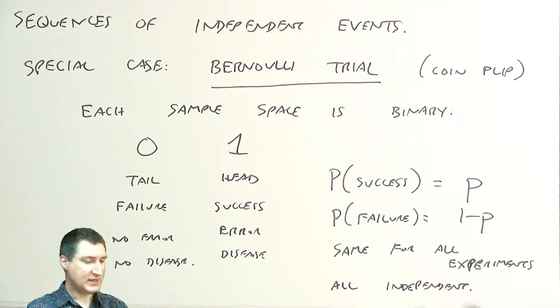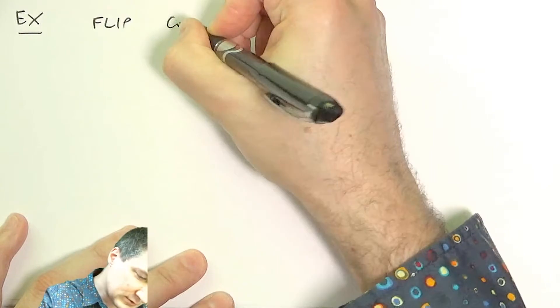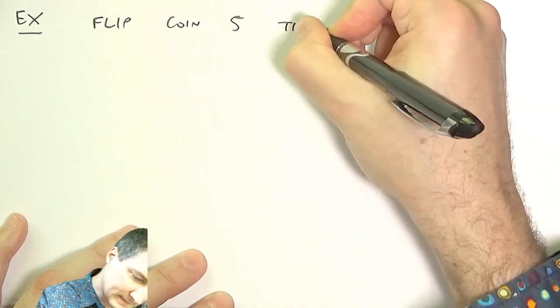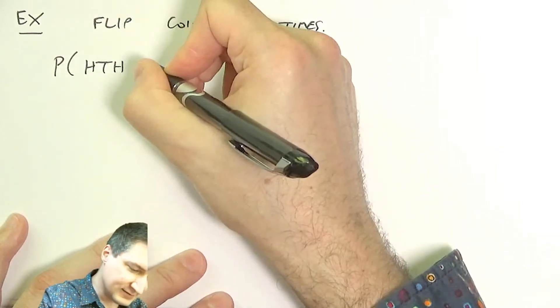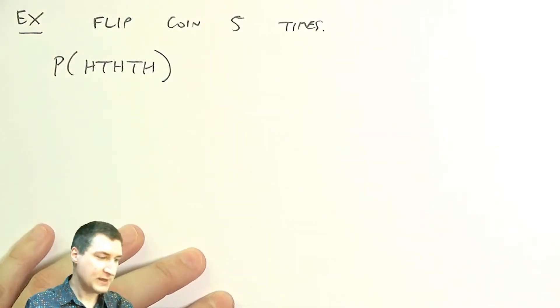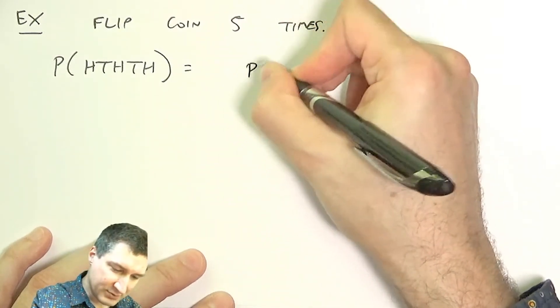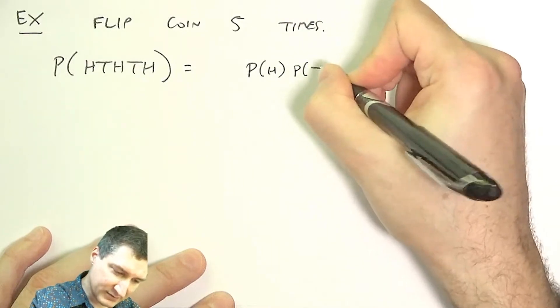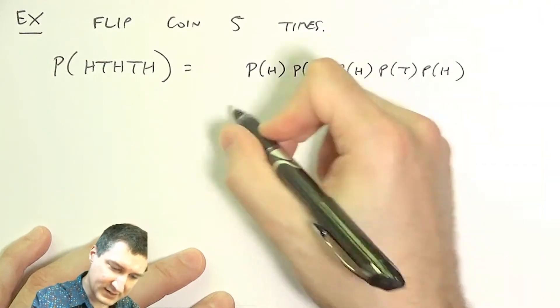If we assume that we have these Bernoulli trials, we can start to compute probabilities in a fairly easy way. For example, flip a coin five times. What is the probability of observing the sequence head, tail, head, tail, head? Each of these flips is independent.